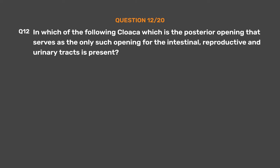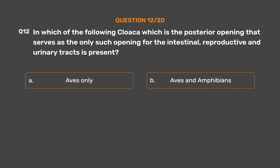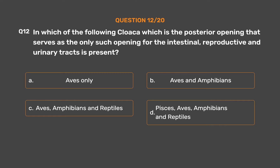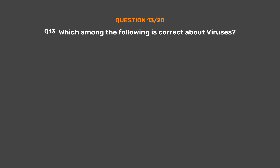Question number twelve. In which of the following is the cloaca — the posterior opening that serves as the only opening for the intestinal, reproductive, and urinary tract — present? Option A: Aves only. Option B: Aves and amphibians. Option C: Aves, amphibians, and reptiles. Option D: Pisces, aves, amphibians, and reptiles. The correct answer is Option C: Aves, amphibians, and reptiles.